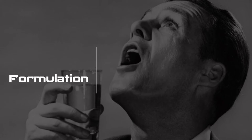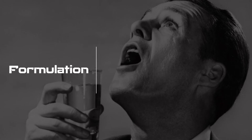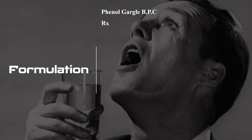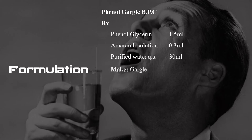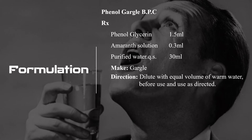Moving on to the formulation of gargles. The example we are going to consider here is phenol gargle BPC. The RX: phenol glycerin 1.5 ml, amaranth solution 0.3 ml, purified water quantity sufficient to produce 30 ml — make gargle. Direction: dilute with equal volume of warm water before use and use as directed.